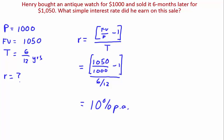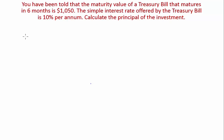Let's go through our last example. You have been told that the maturity value of a treasury bill that matures in six months is $1,050. The simple interest rate offered by the treasury bill is 10% per annum. Calculate the principal of the investment.